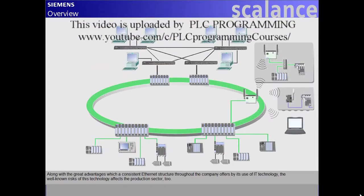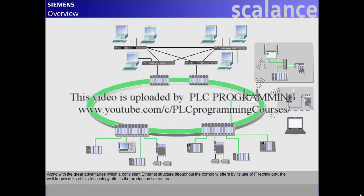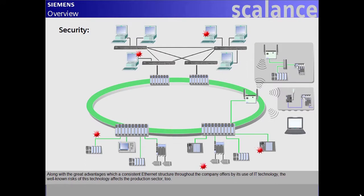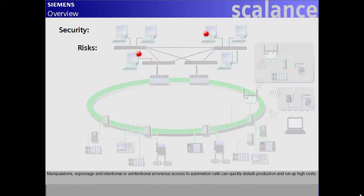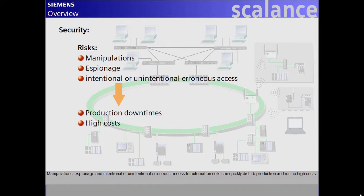Along with the great advantages which a consistent Ethernet structure throughout the company offers by its use of IT technology, the well-known risks of this technology affect the production sector too. Manipulations, espionage and intentional or unintentional erroneous access to the automation cells can quickly disturb production and run up high costs.